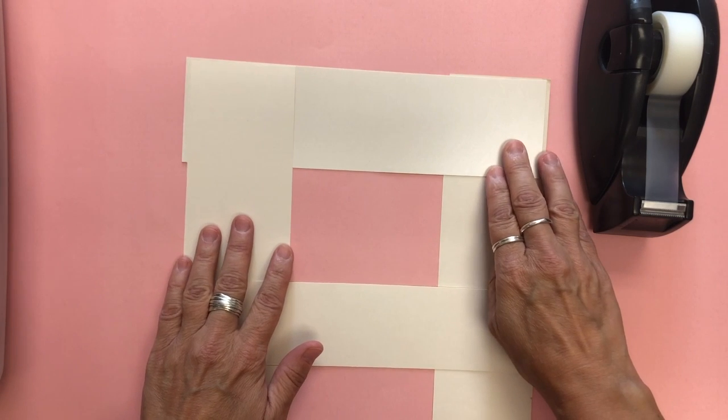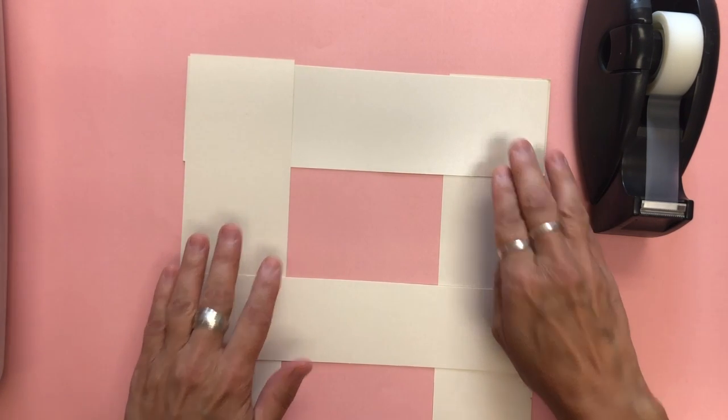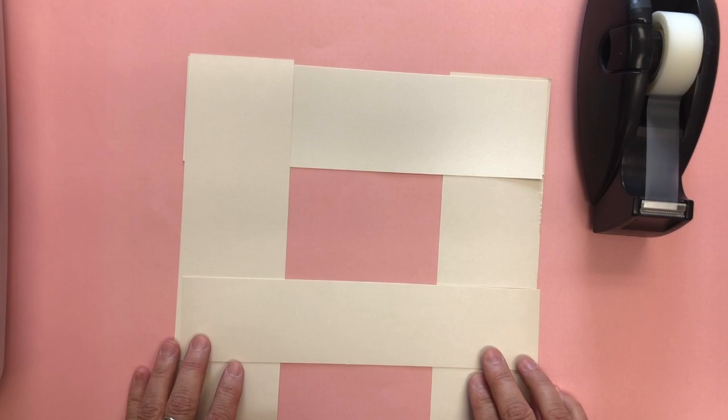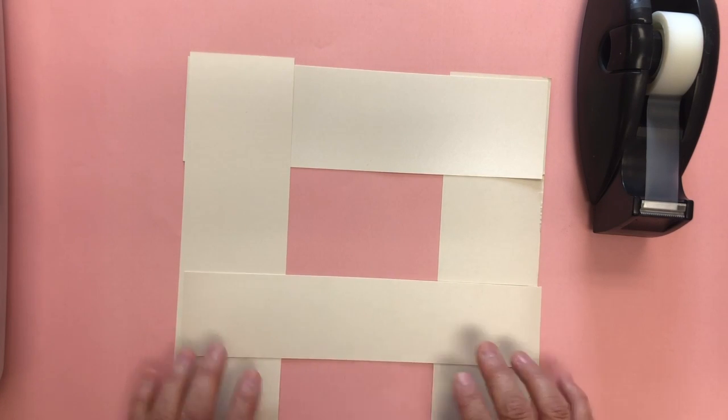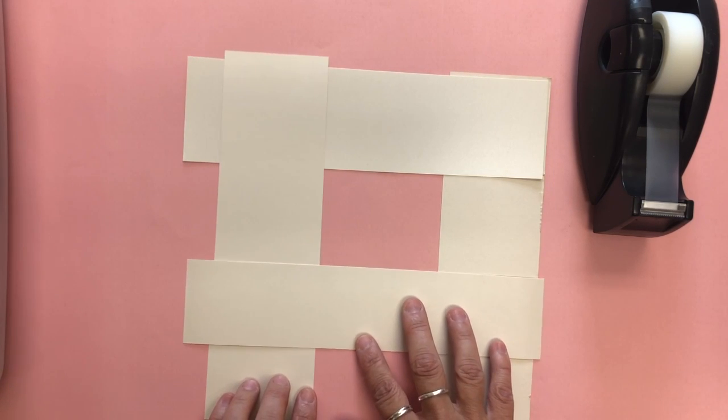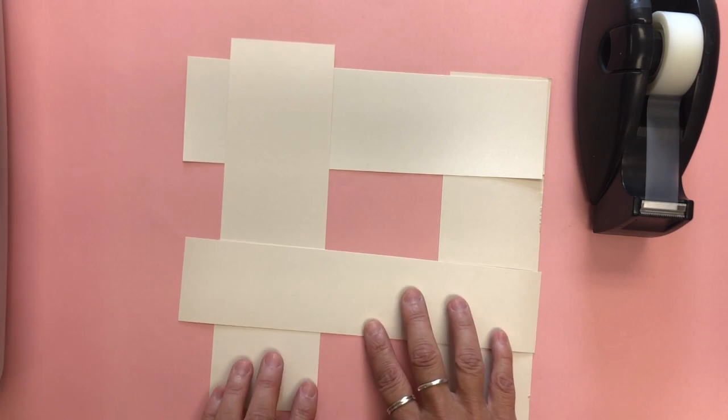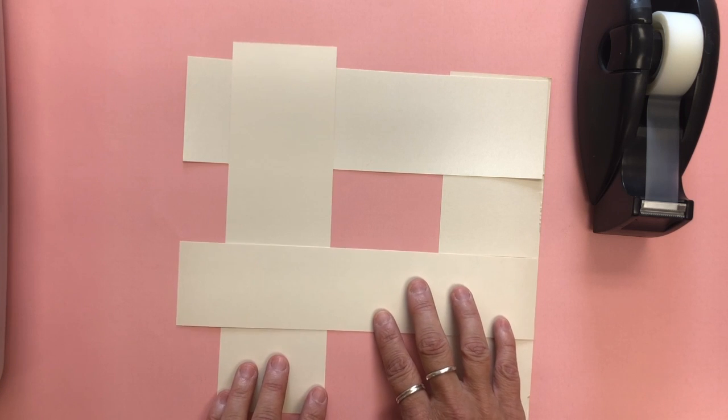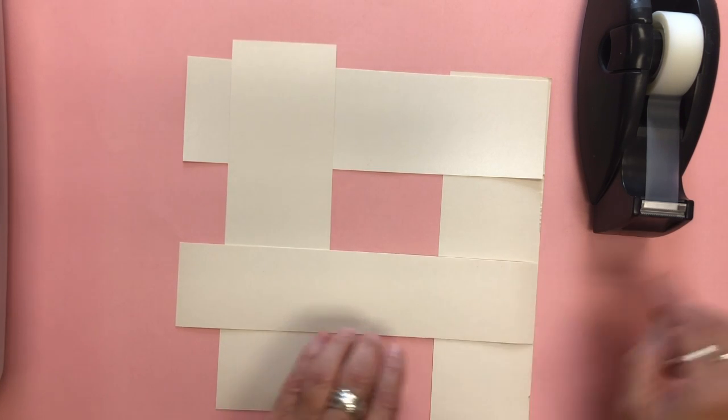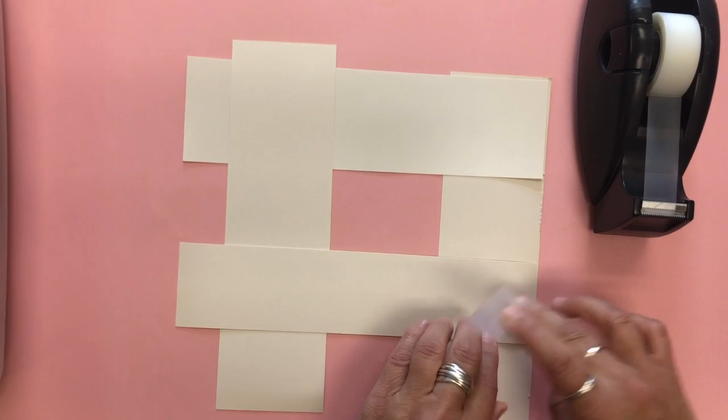You want the viewfinder - it's up to you how big you want the viewfinder to be. You can slide it to make your viewfinder smaller or larger, and once you get it lined up, you're just going to tape it down.